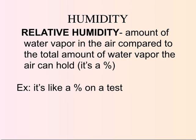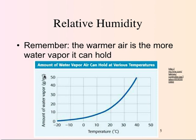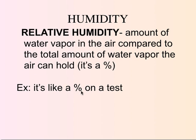What we often talk about and see on the news is relative humidity — the amount of water vapor in the air compared to the total amount of water vapor the air can hold. It's like a percent on a test. If the test was a hundred points and you scored ninety, you got ninety percent. If the air can hold a hundred water vapor molecules and there are ninety in the air, the relative humidity is ninety percent. That makes it easy to compare air of different temperatures because warmer air can hold more water vapor.